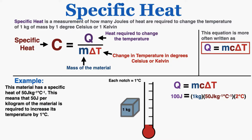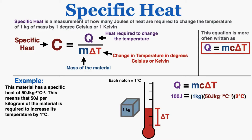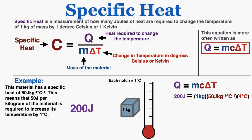So if it requires 50 joules to change the temperature by 1 degree for every 1 kilogram that we have, and we only have 1 kilogram, if we add 100 joules, that's twice the amount needed to change the temperature by 1 degree Celsius, so 100 joules would change the temperature by 2 degrees Celsius. If I were to add 200 joules to just 1 kilogram of this material, that's four times the heat required, so 200 joules would change the temperature by 4 degrees.